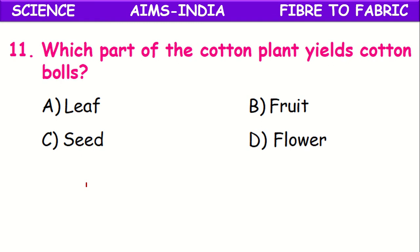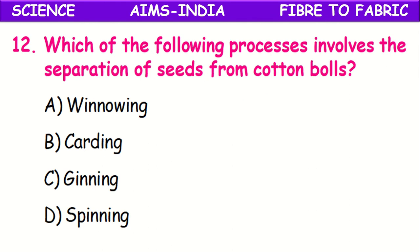Which part of the cotton plant produces cotton balls? The options are leaves, fruit, seed, and flower. Cotton balls come from the fruit of the cotton plant.